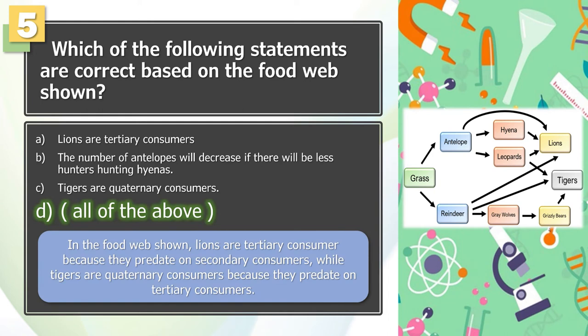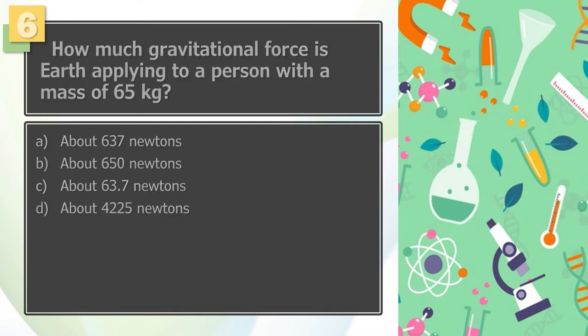The answer is D. In the food web shown, lions are tertiary consumer because they predate on secondary consumers, while tigers are quaternary consumers because they predate on tertiary consumers.